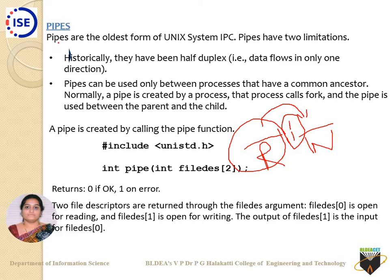Pipes are the oldest form of IPC. They have two limitations. First, they are half-duplex — data flows in only one direction, so there is no writing back. Second, pipes can only be used between processes that have a common ancestor. Normally, a pipe is created by a process that then calls fork, and the pipe is used between the parent and child.